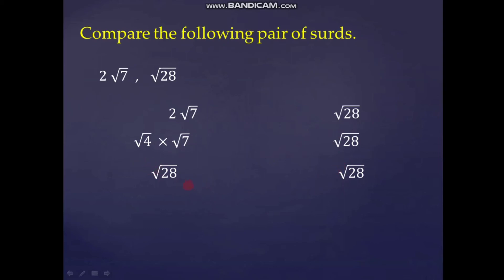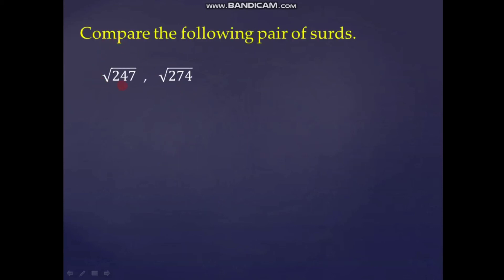The orders of both SIRDs are equal, so we compare only the radicands: 28 and 28. Since 28 equals 28, root 28 equals root 28, meaning 2 root 7 equals root 28. For the third example, compare root 247 and root 274. Both are already in pure form with equal orders. Since 247 is less than 274, root 247 is less than root 274.